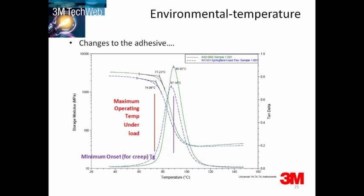For higher temperatures, especially joints under load, creep is an important consideration, and this will become significant as you approach the adhesive's Tg. This can be compensated for by the design of the joint and adhesive selection. At lower temperatures, avoiding brittle behavior under load is also an important consideration.